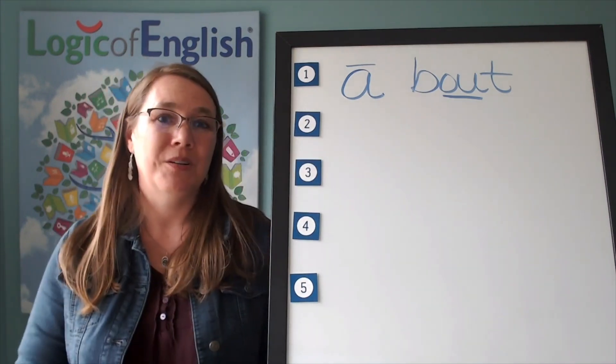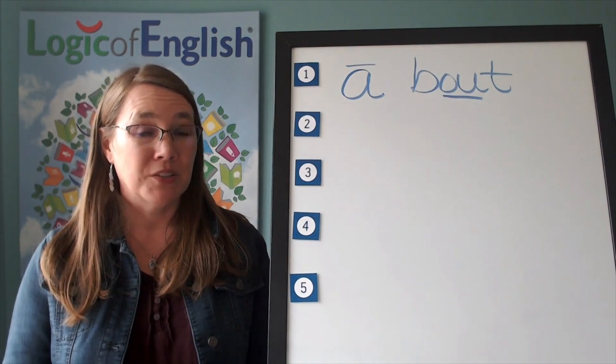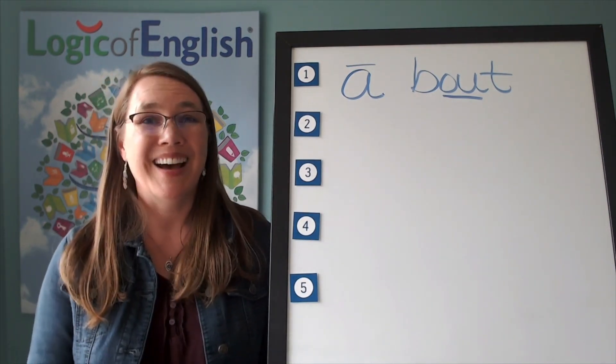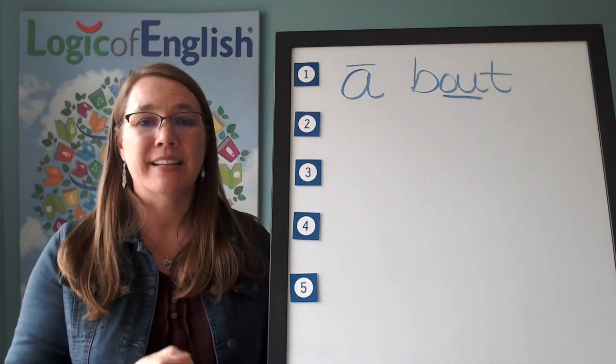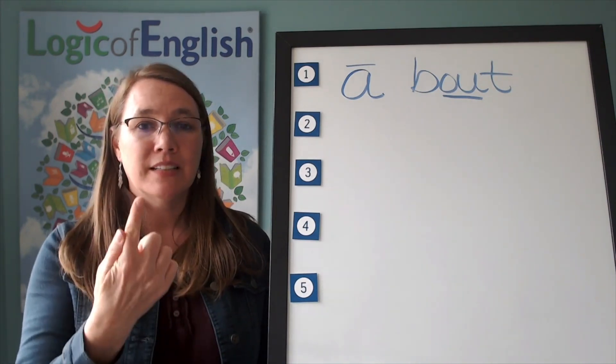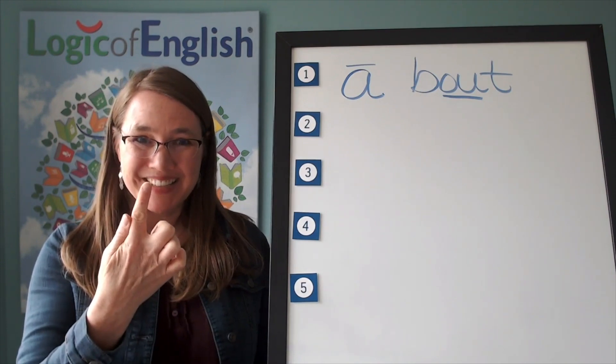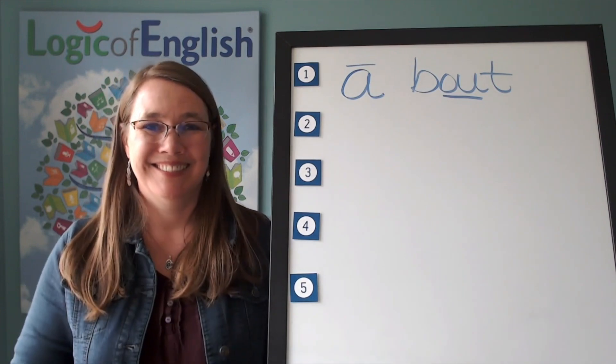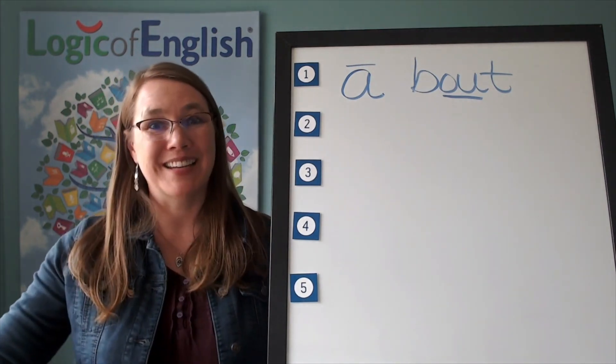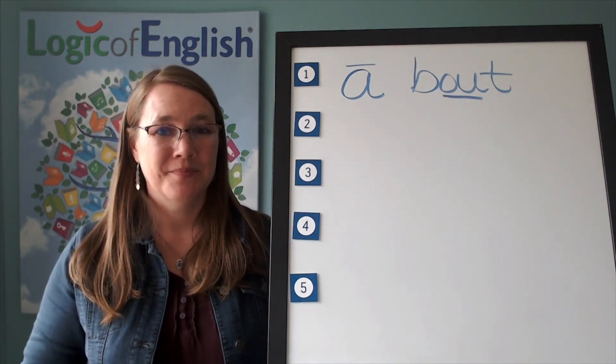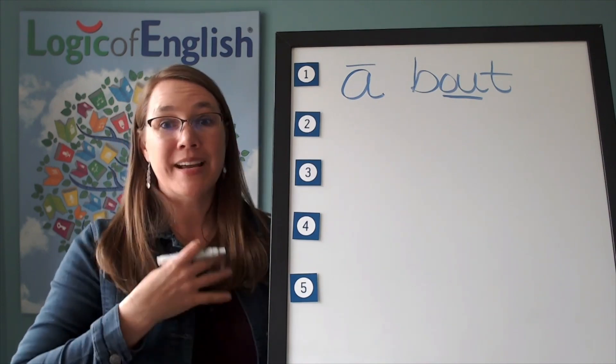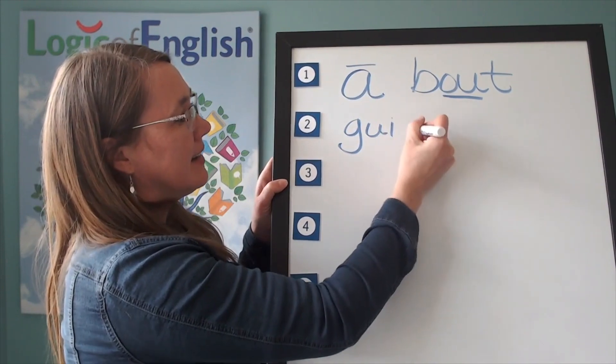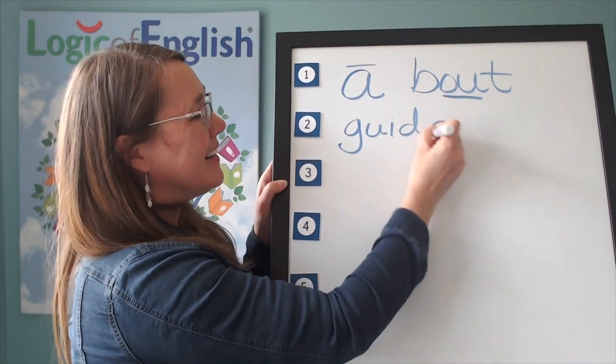The next word is guide. I will have a wilderness guide guide me through this park. Guide. Go ahead and say guide. Let's sound it out. Guh. Do you see what kind of guh? I. Duh. Silent final e. Go ahead and write guide. All right. Help me to write it. Guh. I. Duh. Silent final e.